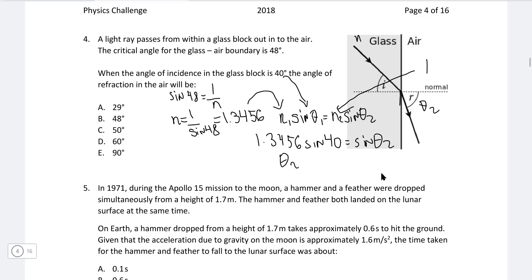So we know that 1.3456 multiplied by sine of theta 1 is 40 degrees. So it'll be equal to N2, which is just 1, multiplied by sine of theta 2. This theta 2 really is the angle that's given as R. So theta 2, or the angle of refraction, would just be equal to the inverse sine of 1.3456 sine of 40. And if we put this into a calculator, we're going to get just under 60 degrees. So the correct answer is D.